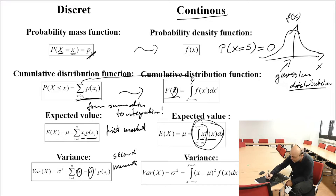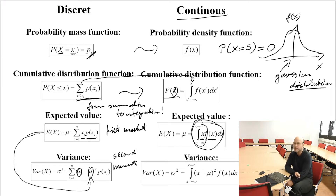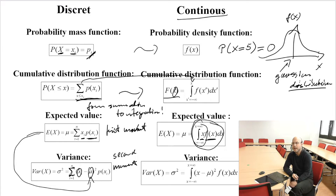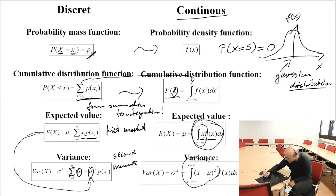The variance is the squared deviation from the expected value. In the discrete case we again have the summation over these squared deviations, and in the continuous case we have the integration over the squared deviation.